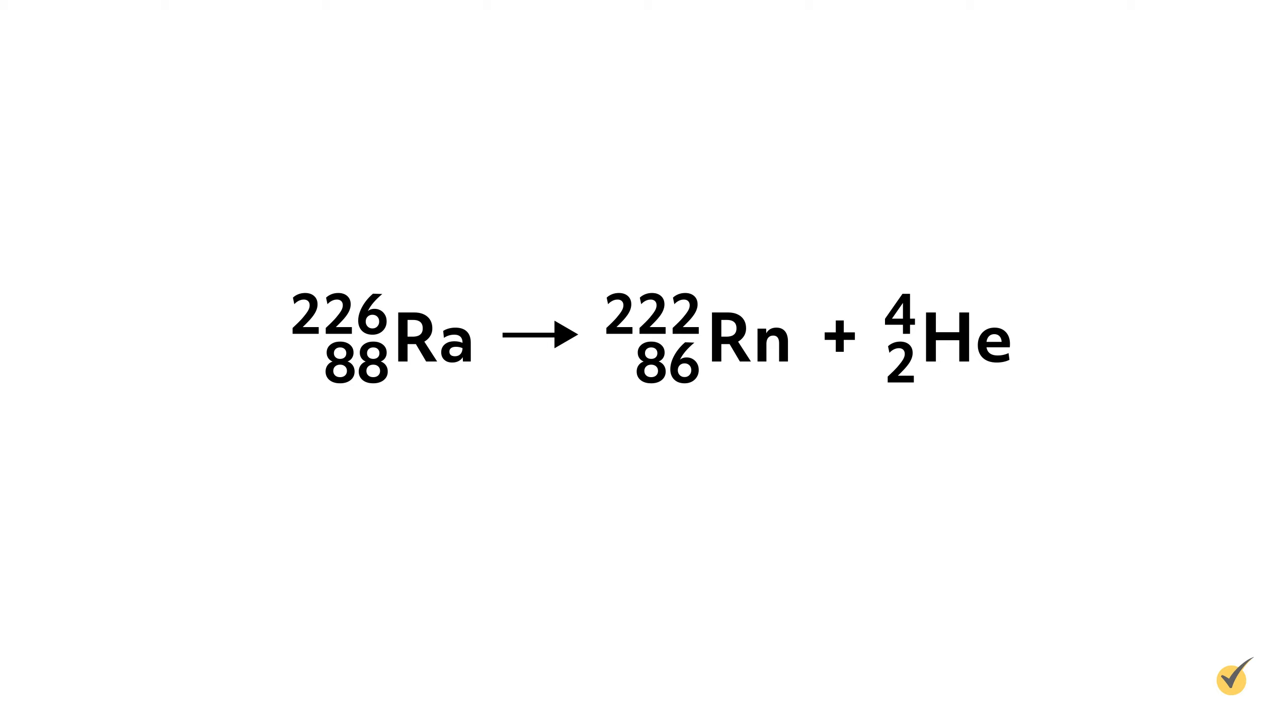In these nuclear decay reactions, you'll also hear the reactant, in this case radium, called the parent, and the larger product called the daughter, which in this case is radon.